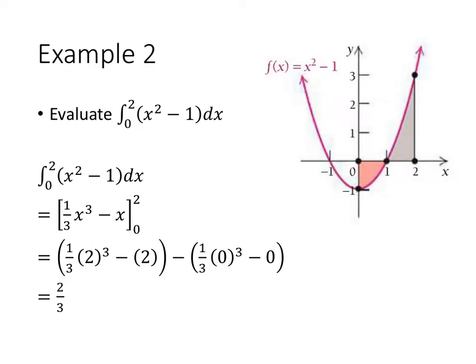So let's follow the steps again. Using the fundamental theorem of calculus, we first find an antiderivative. We put our little square brackets with the two numbers to remind ourselves that we need to plug in and subtract. We plug in 2, we plug in 0, and when we do all that we get 2 thirds.